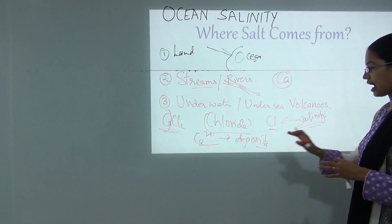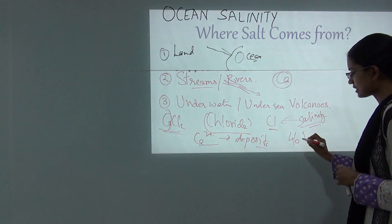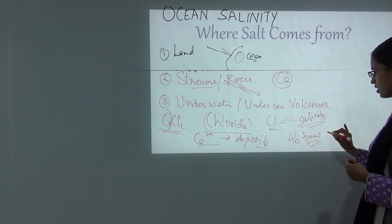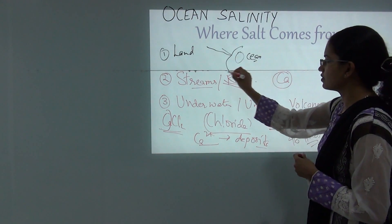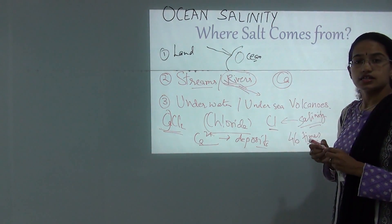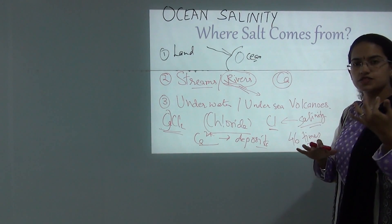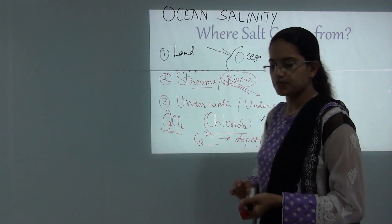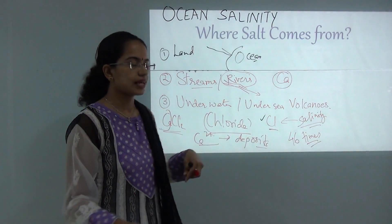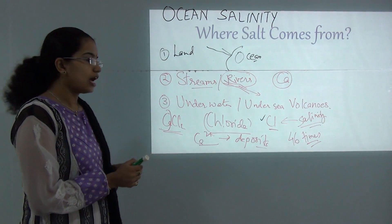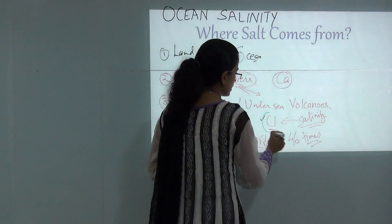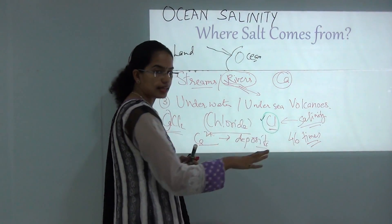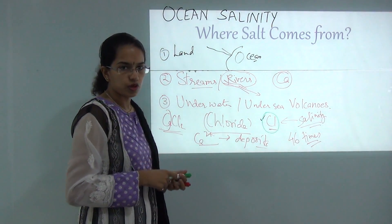This chloride turns out to be the major cause for the salinity in the oceans. It is estimated that this chloride is nearly 46 times the chloride present in the rivers. So the rivers flowing in do not have that much salinity content, but the oceans have a huge content of salinity. The reason being the calcium coming in from the rivers gets deposited and the chloride is left behind, which is the sole reason for higher salinity in the oceans compared to rivers.